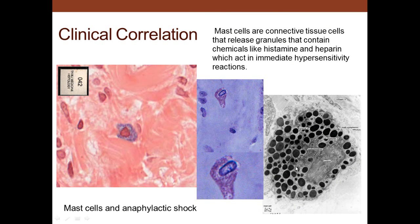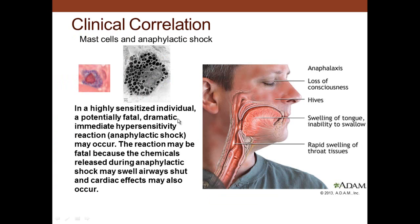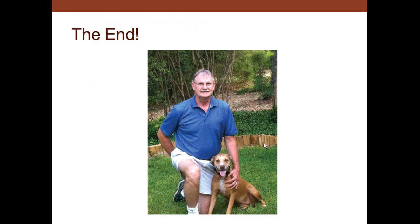For clinical correlation, anaphylactic shock involves mast cells in the connective tissue. As seen in this electron micrograph, mast cells release heparin and histamine, triggering an immediate hypersensitivity reaction. In highly sensitized individuals, this can be a potentially fatal anaphylactic shock. The reaction may shut down airways through tongue or throat swelling, and may cause cardiovascular effects. If anaphylactic shock occurs, it can be deadly.